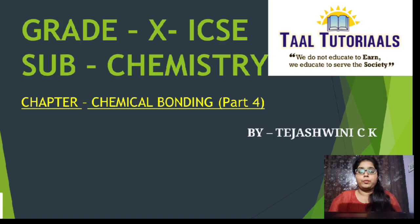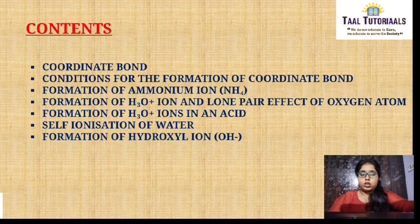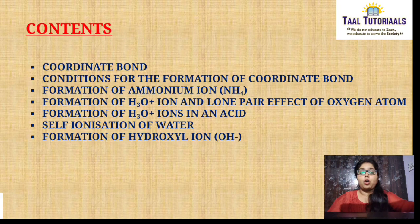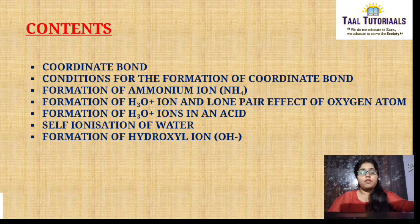Hello everyone. Today our chapter is chemical bonding part 4, which is a continuation of part 3. In this we are going to know about coordinate bond, conditions for the formation of coordinate bond, formation of ammonium ion, formation of H3O plus ion and lone pair effect of oxygen atom, formation of H3O plus ions in an acid.